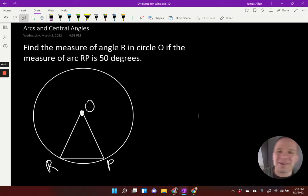All right, we got ourselves some arcs and central angles here. We want to find the measure of angle R in circle O if the measure of arc RP is 50 degrees. Unfortunately I don't have fancy notation here, but words will work. So arc RP is 50 degrees, so that means this right here, that's 50 degrees.